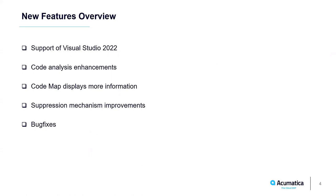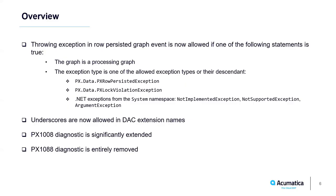Let's look closely at the changes in static code analysis. We relaxed code analysis a bit after realizing that some Acuminator diagnostics are too strict. For example, the rule that forbids throwing exceptions in the row-persisted graph event became more flexible. Now it does not report an error if the graph is a processing graph, or if the exception type belongs to several allowed exception types or is derived from them. We allow throwing two special Acumatica exception types: PXRowPersistedException and PXLockViolationException.